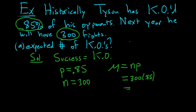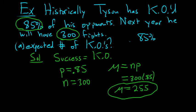So we expect Mr. Tyson to knock out 255 of his opponents. You could actually do this without any statistics or probability. So he knocks out 85% of his opponents, so 85% of 300. In mathematics, of means multiply. So 85% of 300 is 0.85 times 300, which is 255. So the formula does make sense. It's p% of n. That's why the formula makes sense.